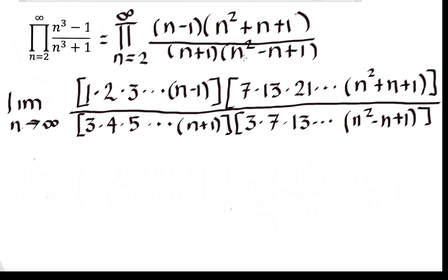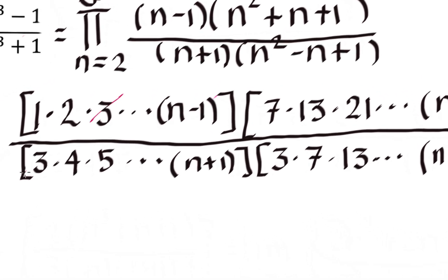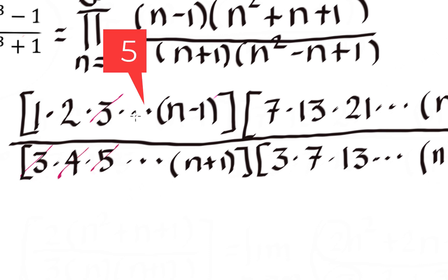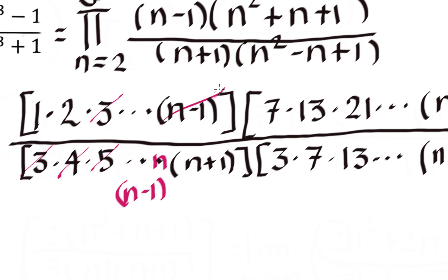This is our expansion of the infinite product. Now let's see what cancels. Notice that the 3 in the numerator and the 3 in the denominator are the same — we can cancel them. Similarly, the 4s cancel, the 5s cancel, and this pattern continues: the n minus 1 terms also cancel, leaving n times (n plus 1) in the denominator from the first factors.